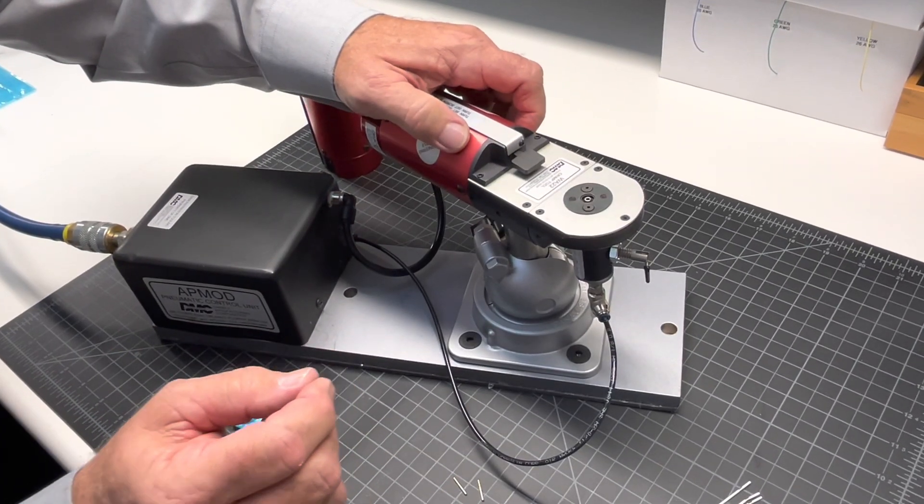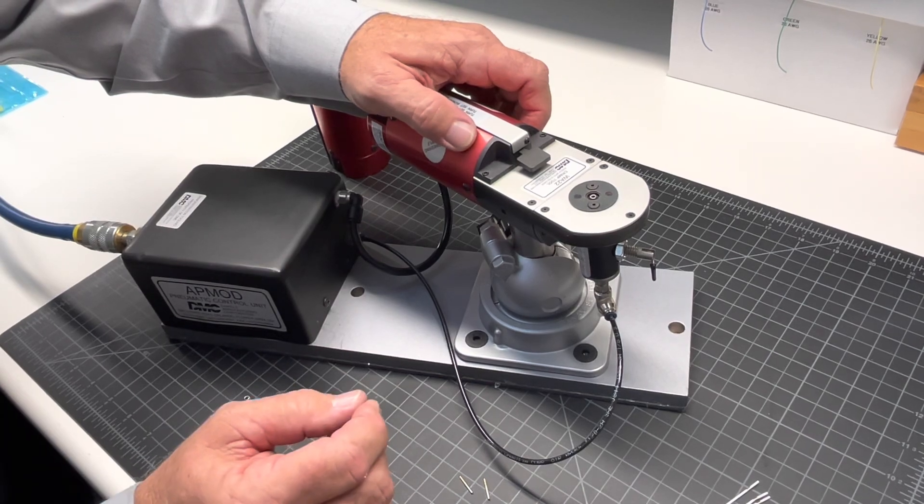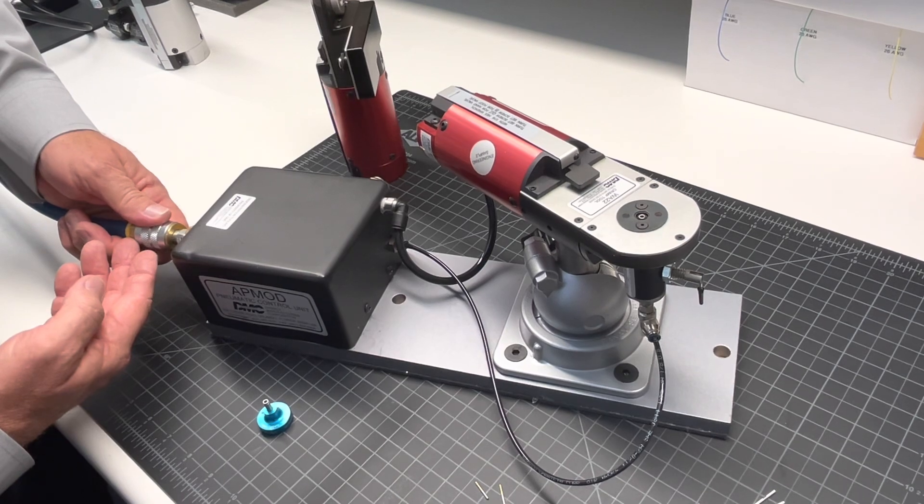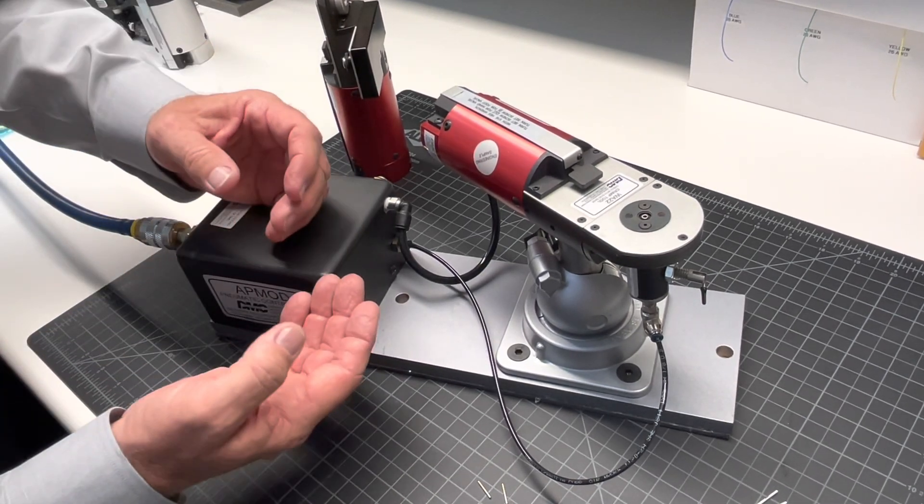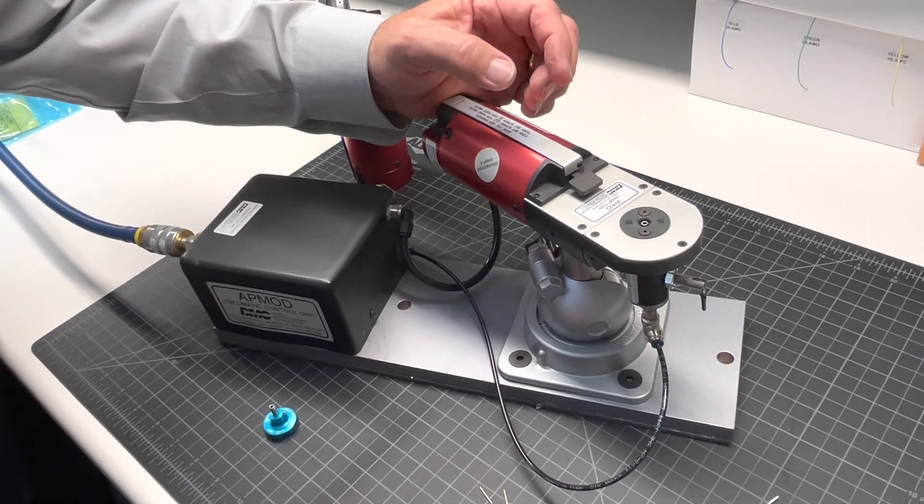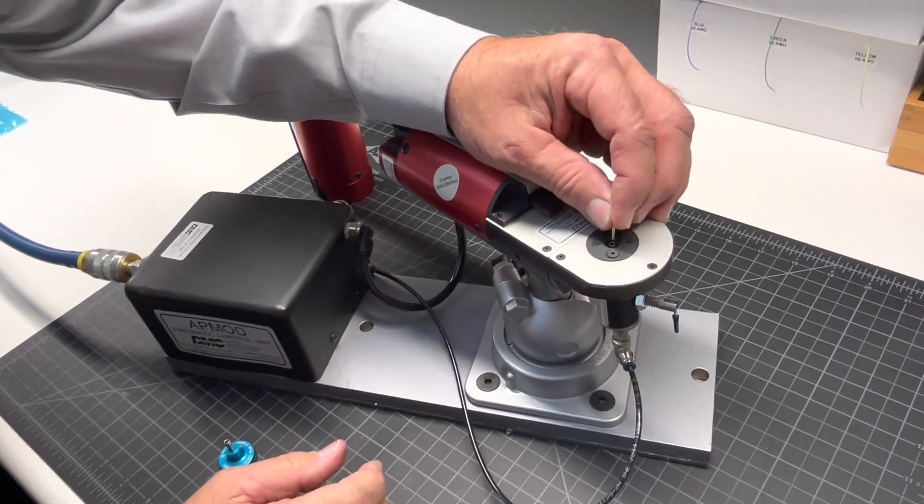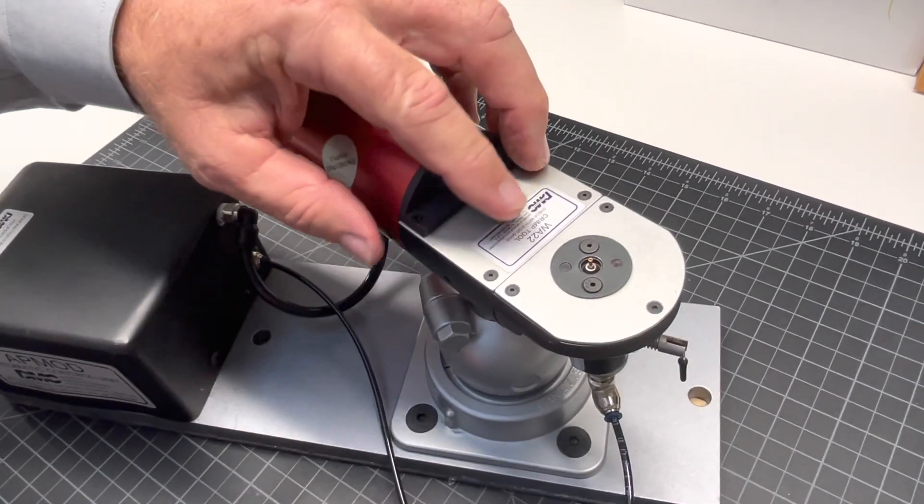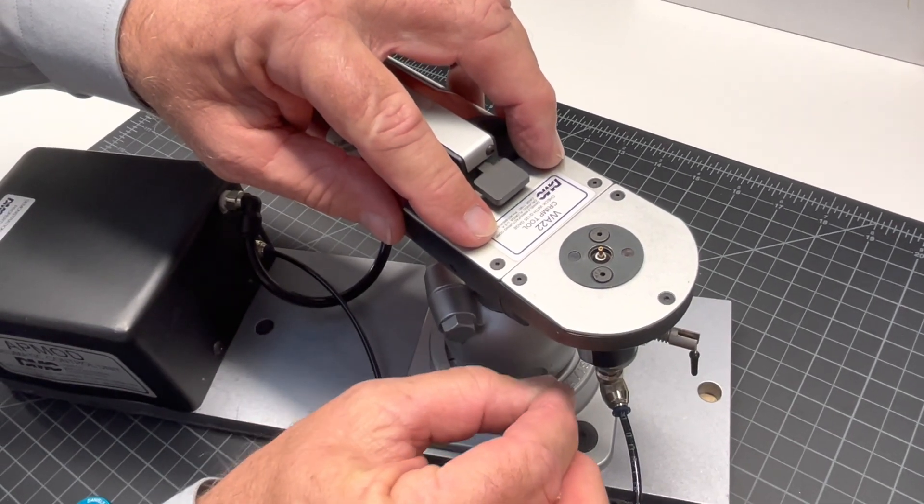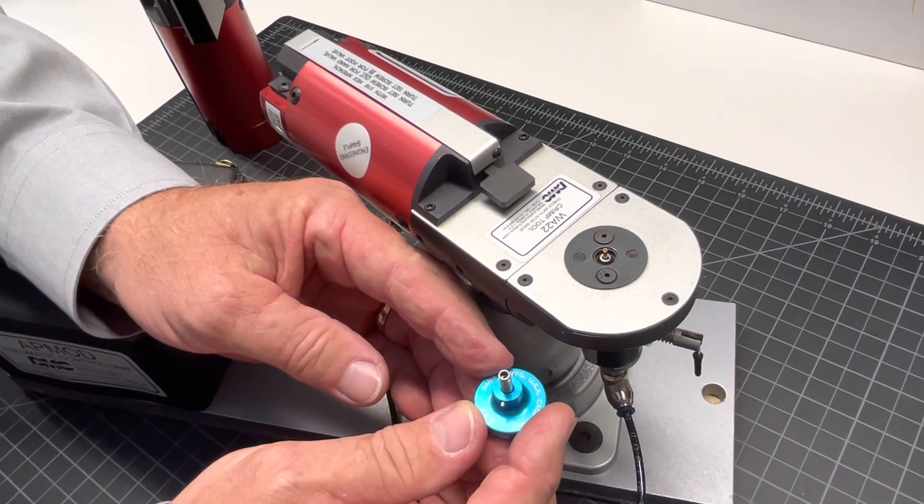This can be adapted for the WA-27F or the WA-22. The way this tool operates is once you apply your shop air pressure to activate the tool, you no longer use the finger press or a foot pedal. You simply install a contact into the auto-positioner. Notice how the contact is raised and the contact doesn't drop down inside the locator of the positioner as it would in a traditional crimp tool.